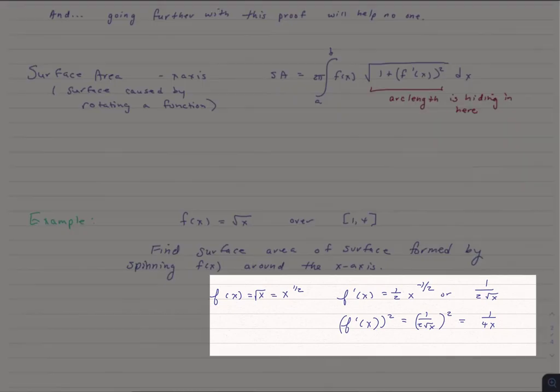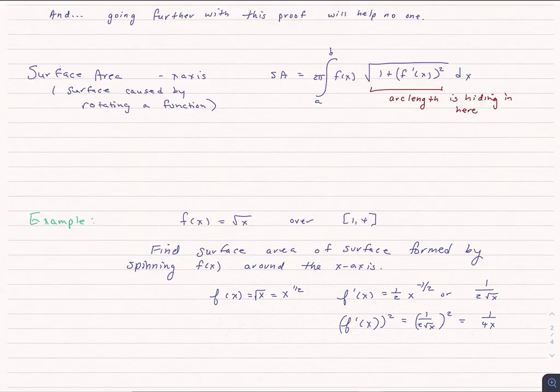We look at f of x, and we immediately find f prime of x because we're going to have to use it in our equation. In fact, to make things even simpler, I'm going to take that f prime of x, and I'm going to go ahead and square that. And at that point, I'm going to plug it into our surface area equation.